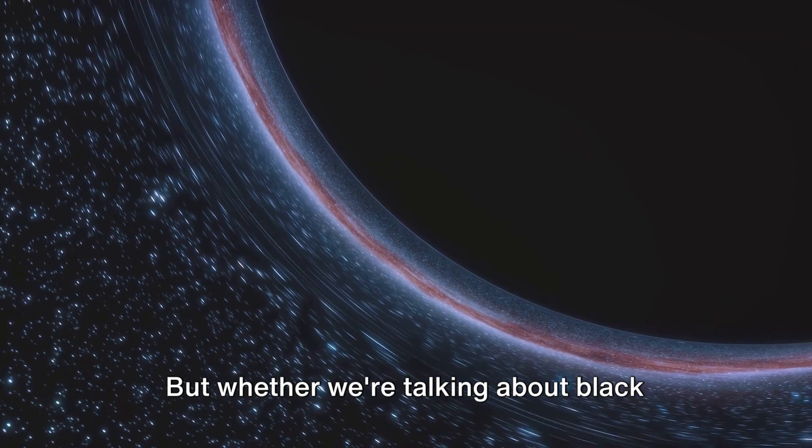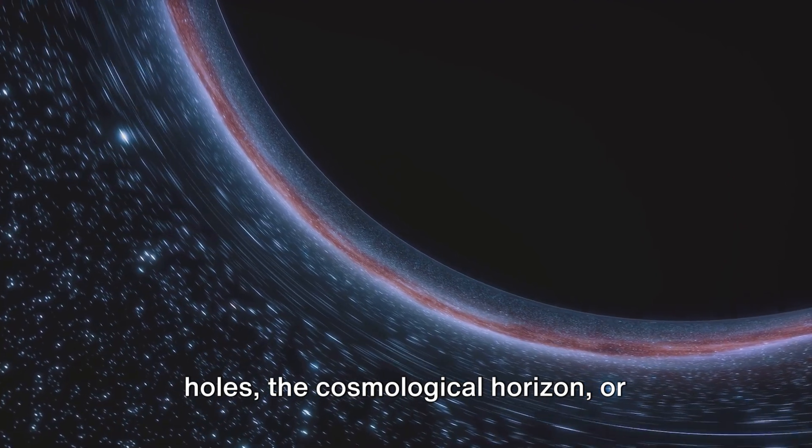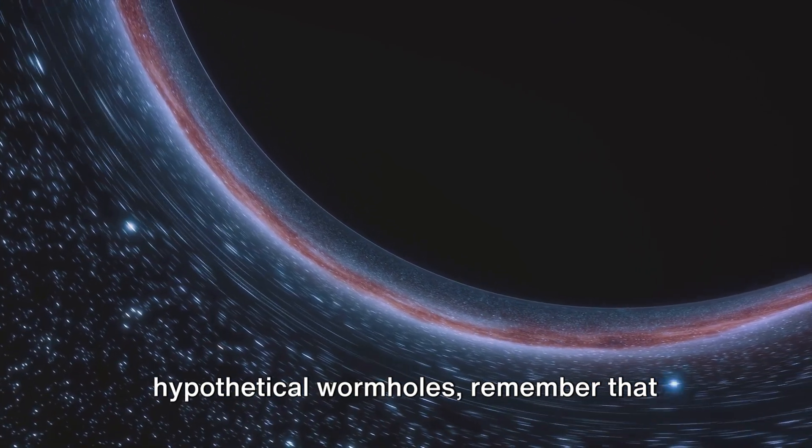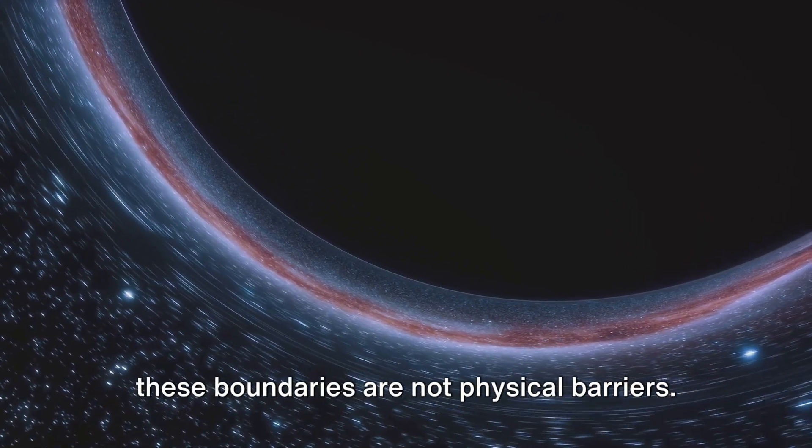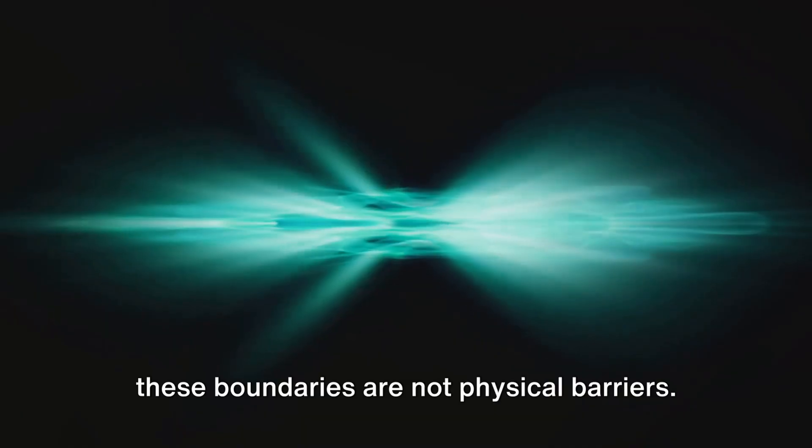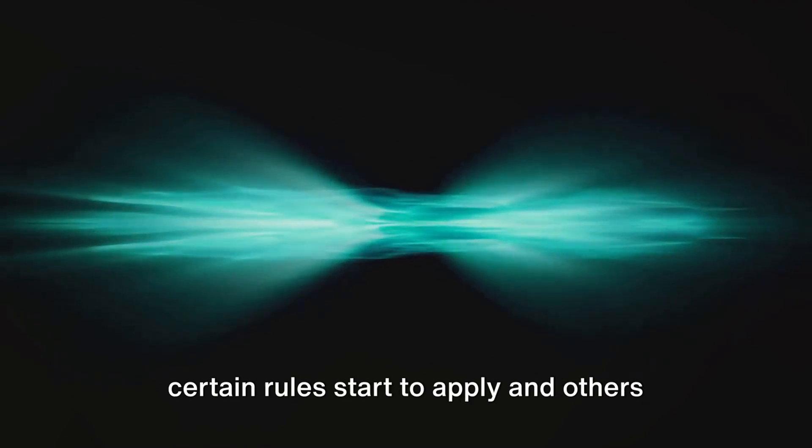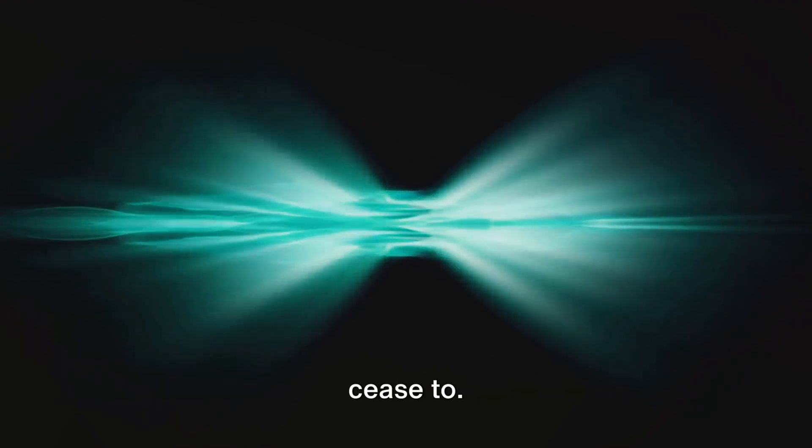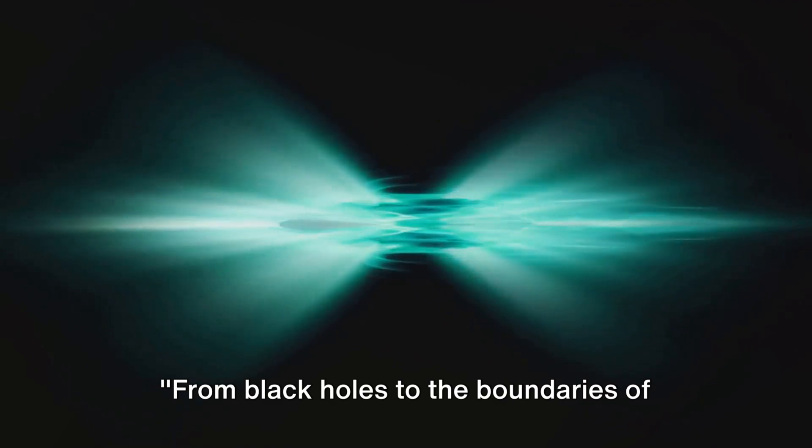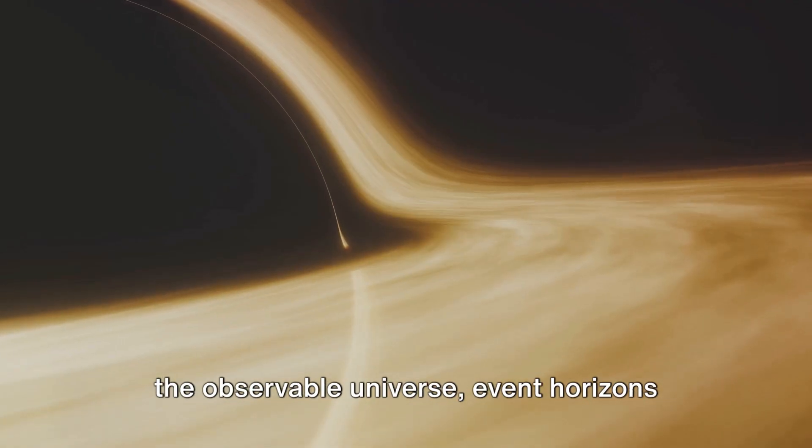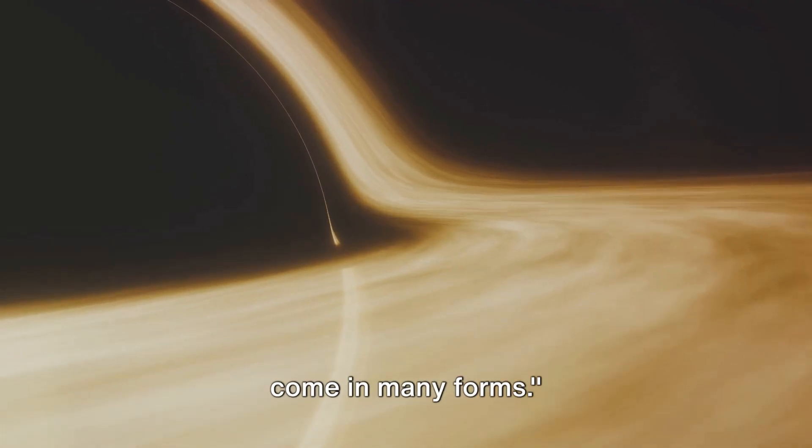But whether we're talking about black holes, the cosmological horizon, or hypothetical wormholes, remember that these boundaries are not physical barriers. They're simply points where, according to our current understanding of physics, certain rules start to apply and others cease to. From black holes to the boundaries of the observable universe, event horizons come in many forms. Each one is a fascinating testament to the mind-boggling complexity and sheer scale of our universe.